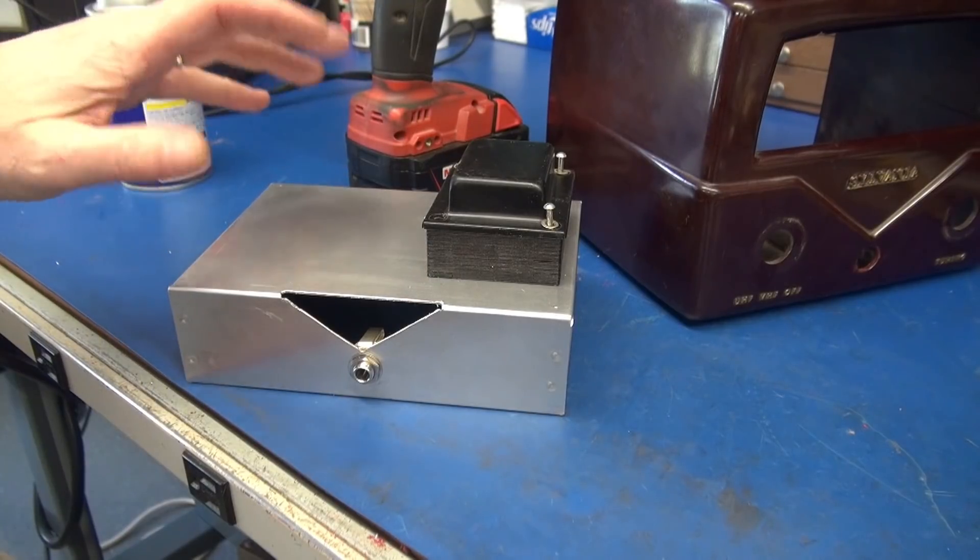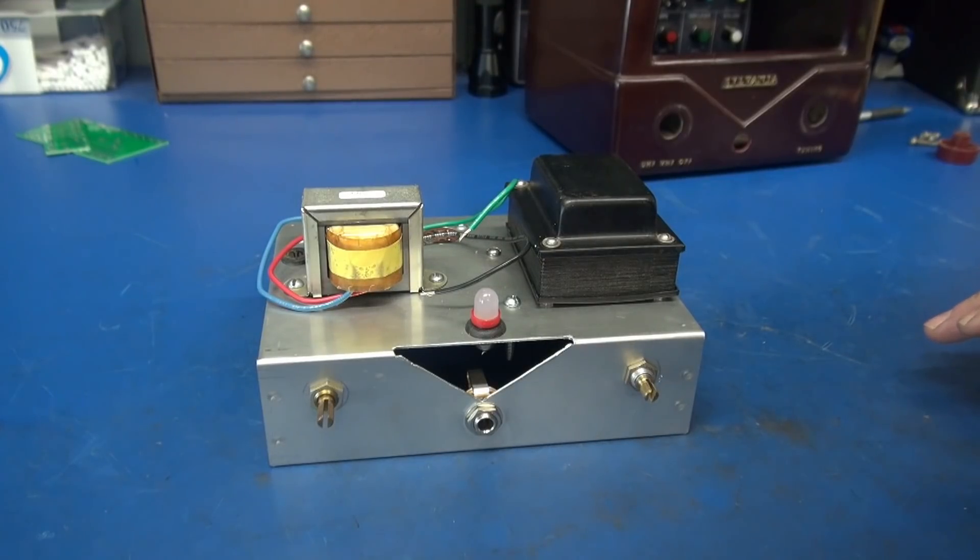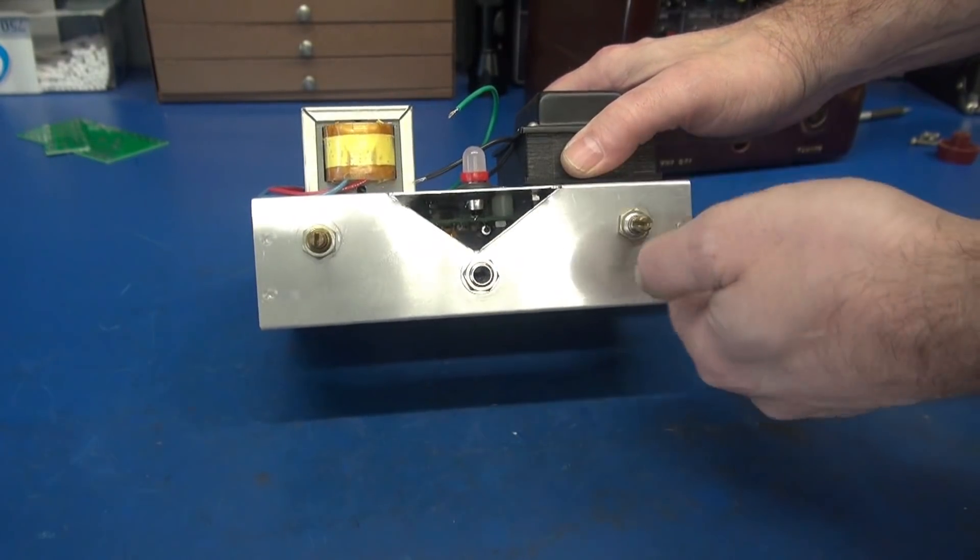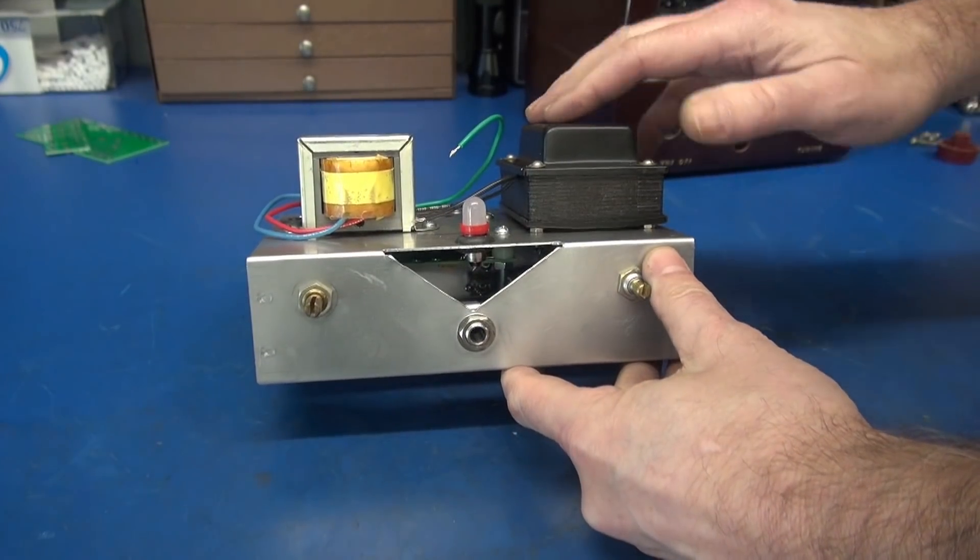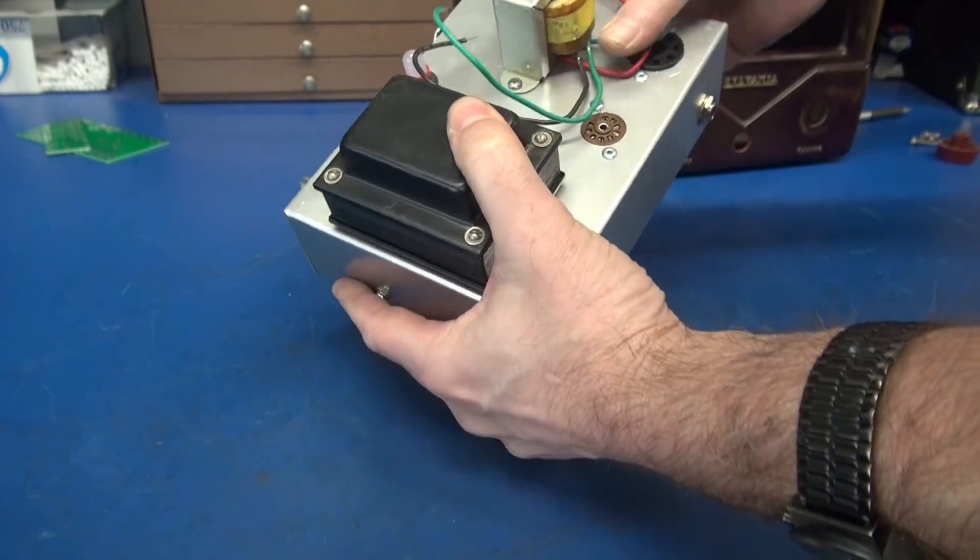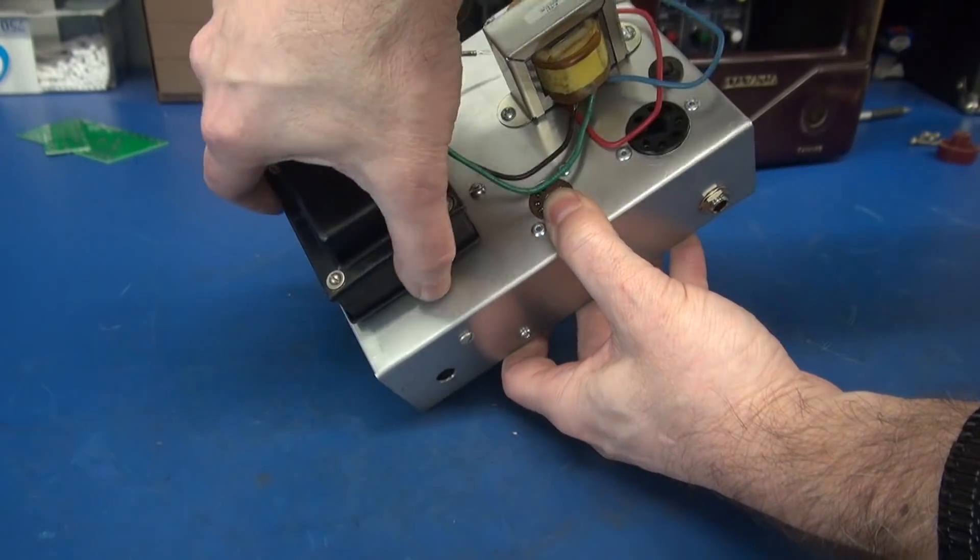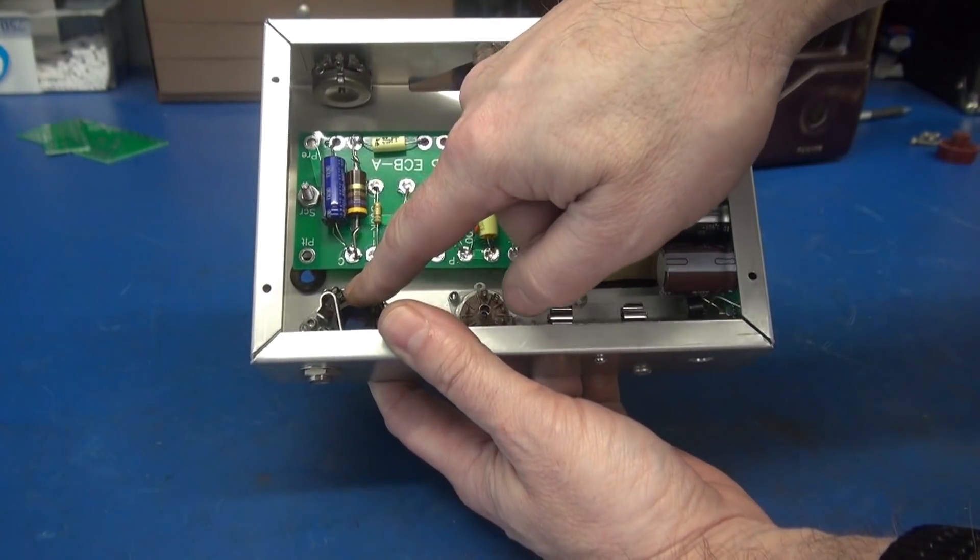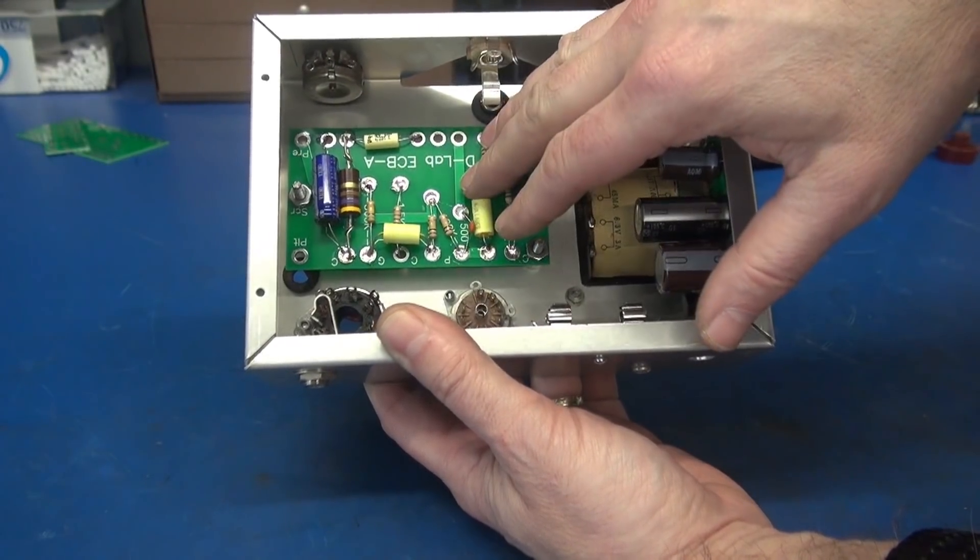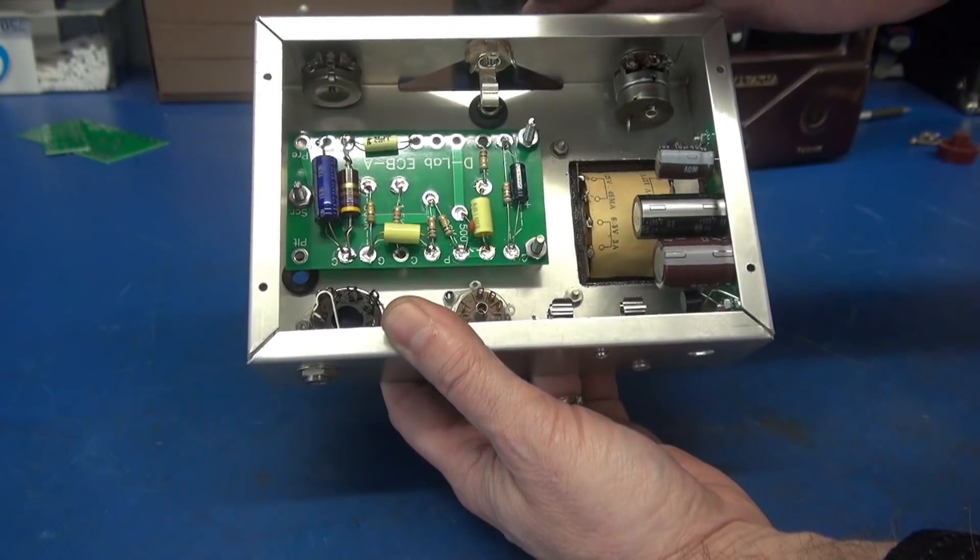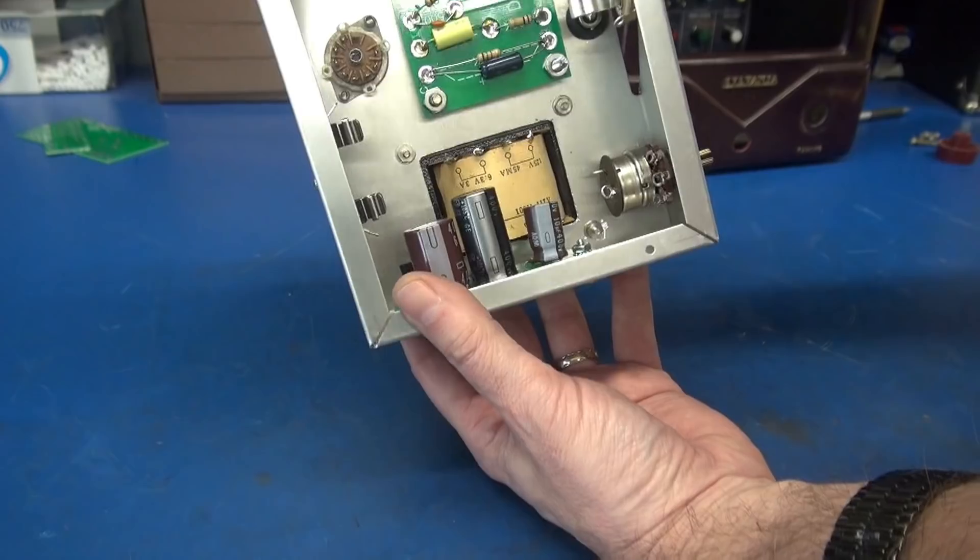Now I need to make the cutouts for the 6V6, 12AX7, and the output transformer. Then we can get the boards in and wire it up. Got all the parts mounted to the chassis, we're ready to wire. Over here there's our tone, power on, volume, input, our Rudolph lamp, power transformer, output transformer. This is our 6V6, 12AX7.